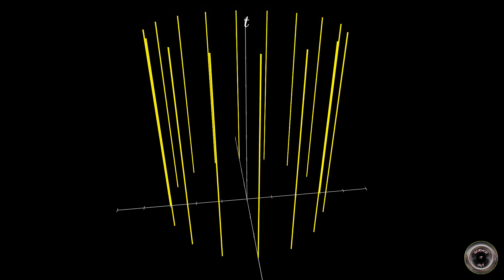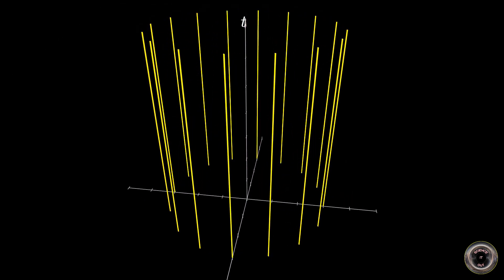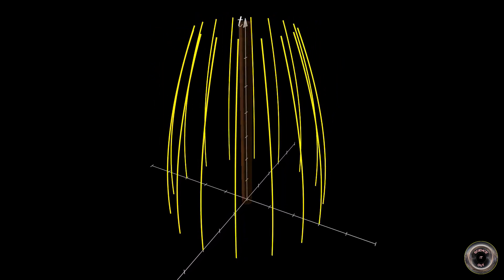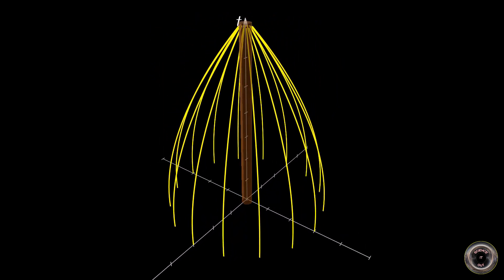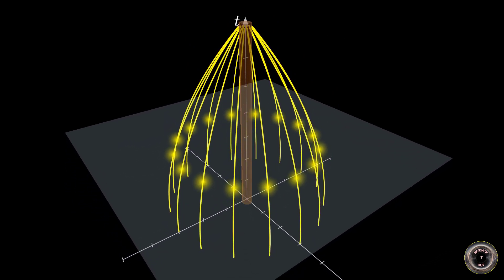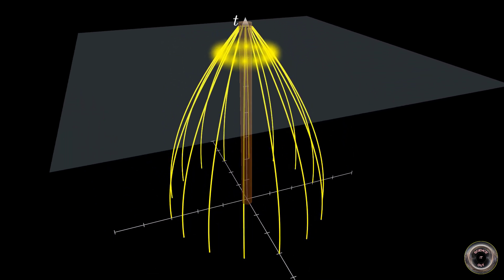But what if the space is not empty? What if there is some mass inside the sphere? Einstein's equation then says that the volume of such a sphere will start shrinking, at first slowly, then faster and faster, and the rate of acceleration of this shrinking will be proportional to the energy and pressure within the sphere. And remember, mass is also energy.